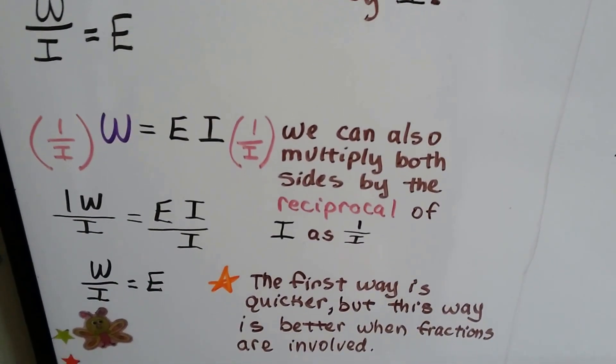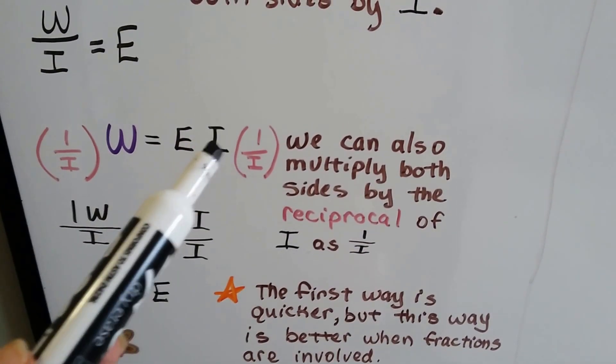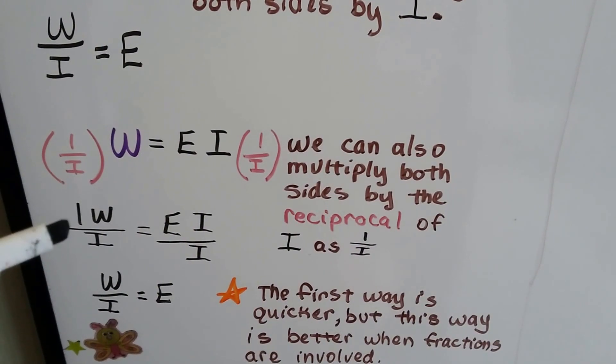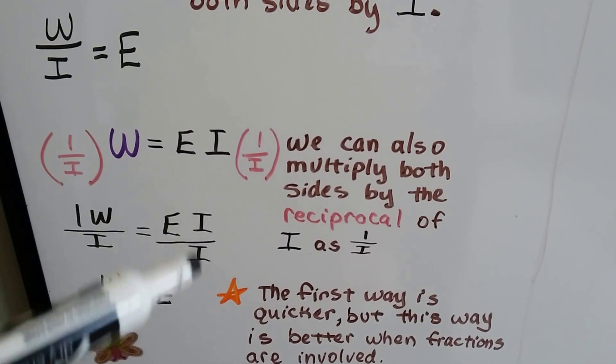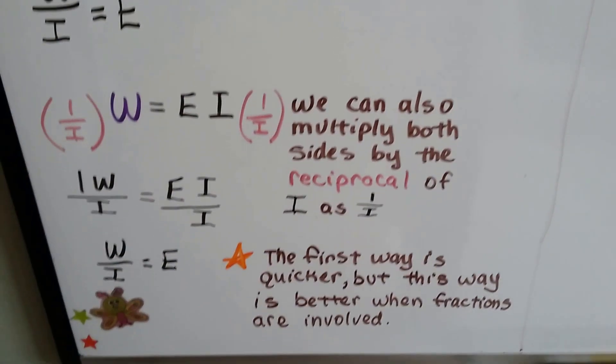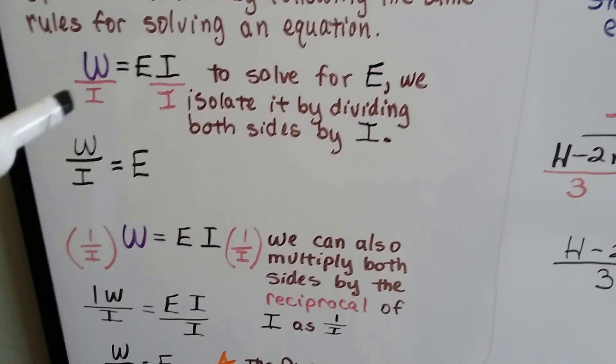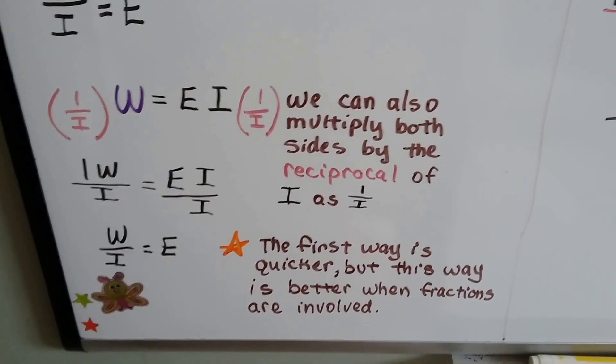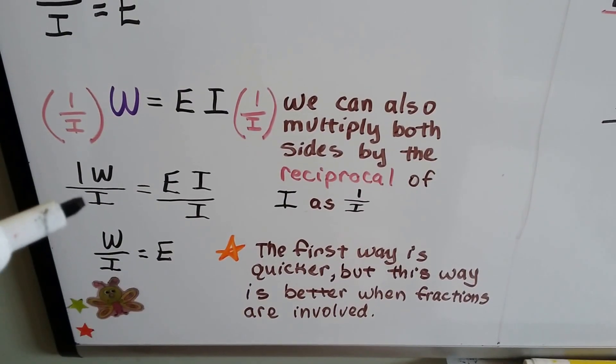We can also multiply both sides by the reciprocal of I as 1 over I, and that will create 1I over 1I, and we'll have 1W over I on this side. We've created a 1 here, which then, because of identity property, ends up just being an E. But the first way is quicker, just dividing it by I, because we go right to it.